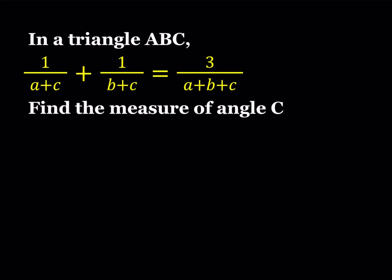Hello everyone. In this video we're going to be looking at a geometry problem. In a triangle ABC, 1 over A plus C plus 1 over B plus C equals 3 over A plus B plus C, and we're supposed to find the measure of angle C.